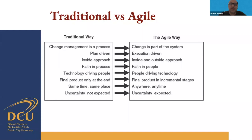In the traditional way, the final product is delivered only at the end — there are no sub-products or partial deliveries along the way. I've seen cases in the industry where people combine prototype-based design with waterfall, but that has its own drawbacks. In agile, the final product is delivered in incremental stages.